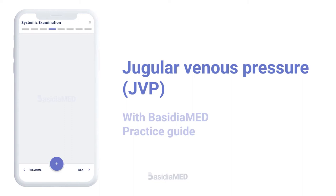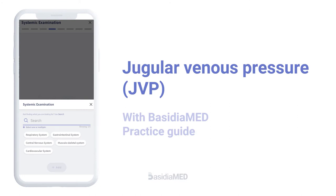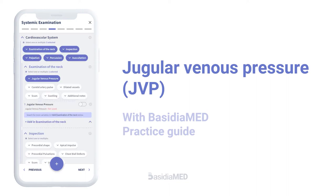Examination of Jugular Venous Pressure. Jugular venous pressure, or the JVP, is an important parameter that gives insight into the fluid status and the central venous pressure of the patient. It is to be examined especially in cardiac, renal, and respiratory cases.